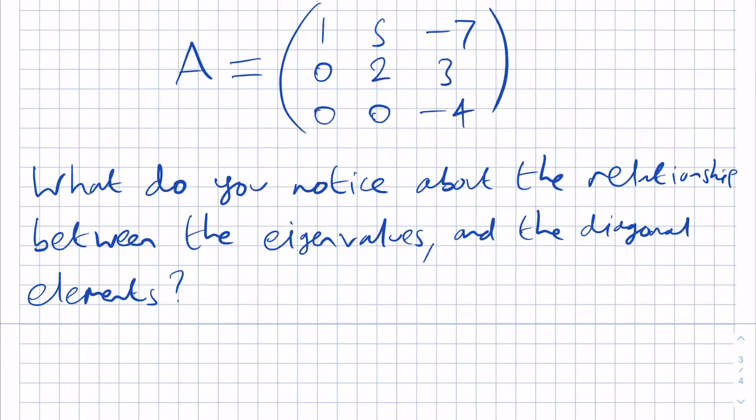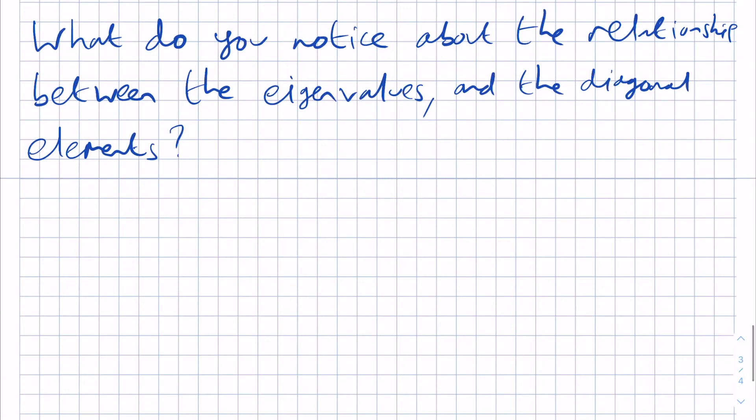And it says what do you notice about the relationship between the eigenvalues and the diagonal elements? Well first let's begin by actually computing the eigenvalues as required. To do this we solve the equation det of A minus lambda I is equal to 0.